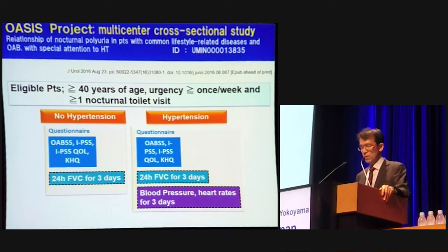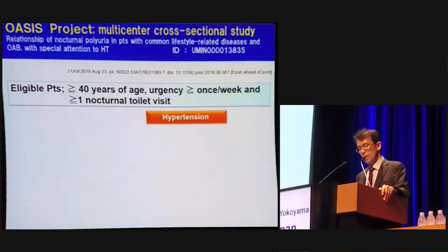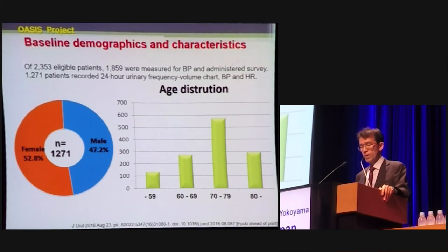To investigate the relationship of nocturnal polyuria in patients with common lifestyle-related disease, with special attention to hypertension, we planned the following multi-center cross-sectional study: the OASIS project. Eligible patients with urgency more than once per week and patients visiting the toilet more than once at night were given a survey to record questionnaires, a 24-hour frequency volume chart, blood pressure, and heart rate for three days. Patients were stratified according to hypertension status: Group 1, no hypertension; Group 2, controlled hypertension; Group 3, untreated hypertension; Group 4, uncontrolled hypertension. Of 20,300 eligible patients, 1,200 patients recorded the 24-hour urinary frequency volume chart, blood pressure, and heart rate.